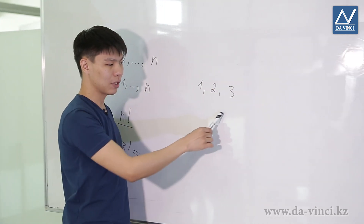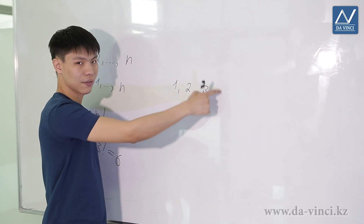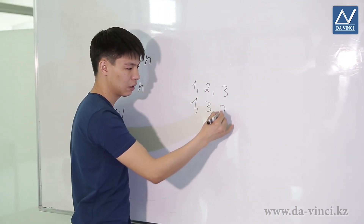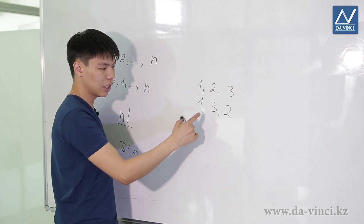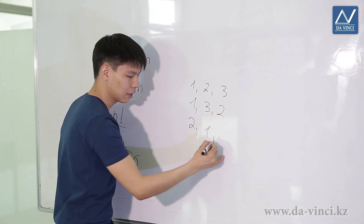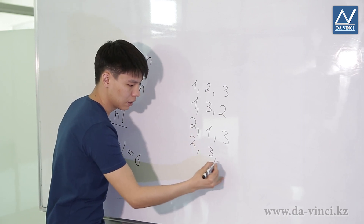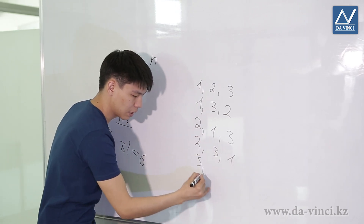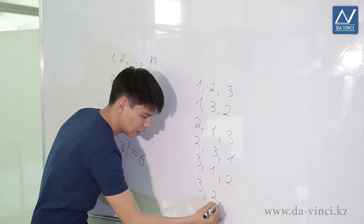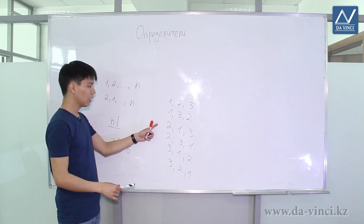Let's analyze all permutations of 1, 2, 3. They are: 1 2 3 (identical permutation); 1 3 2; 2 1 3; 2 3 1; 3 1 2; and 3 2 1. We have found all 6 permutations.